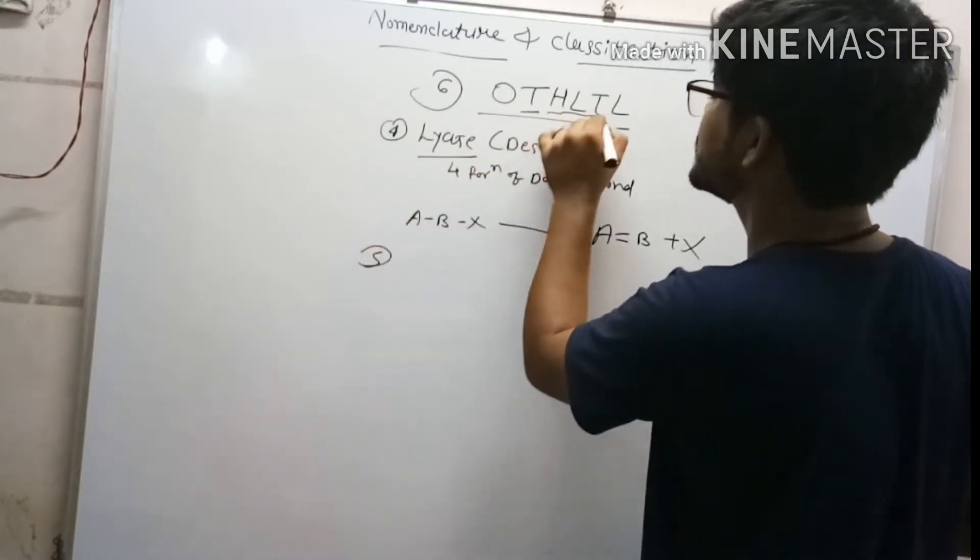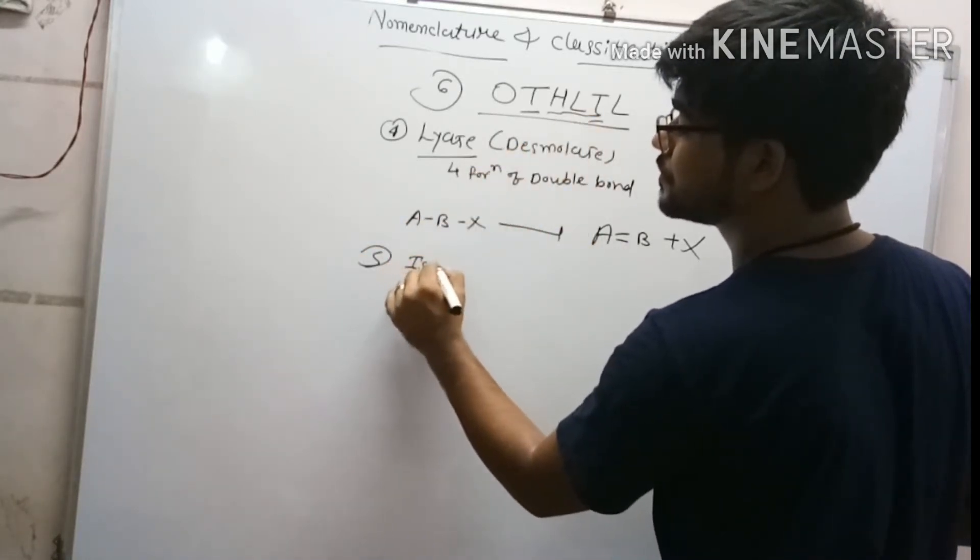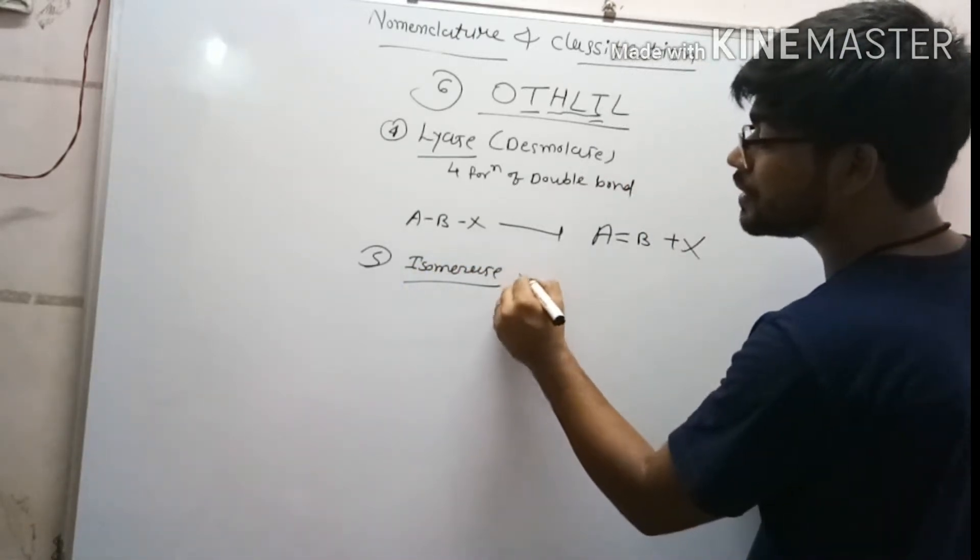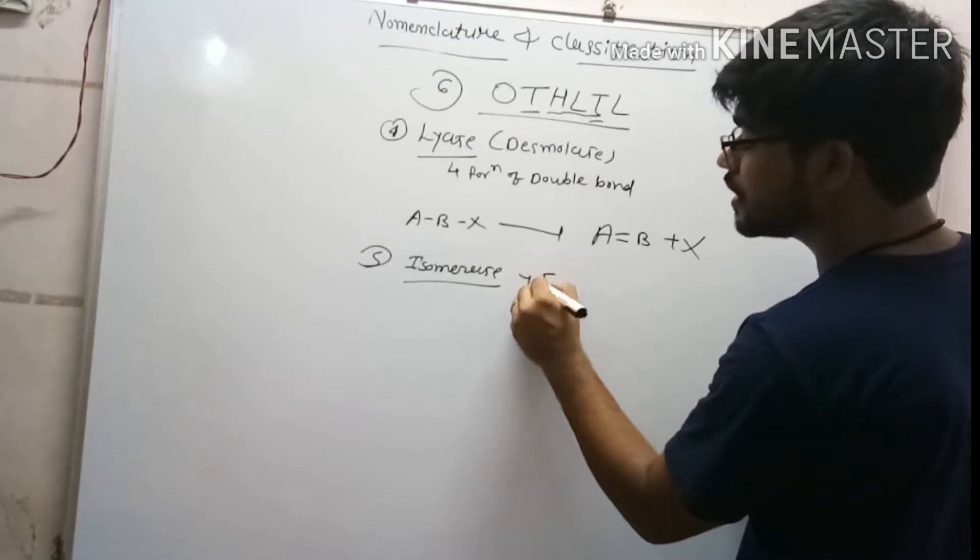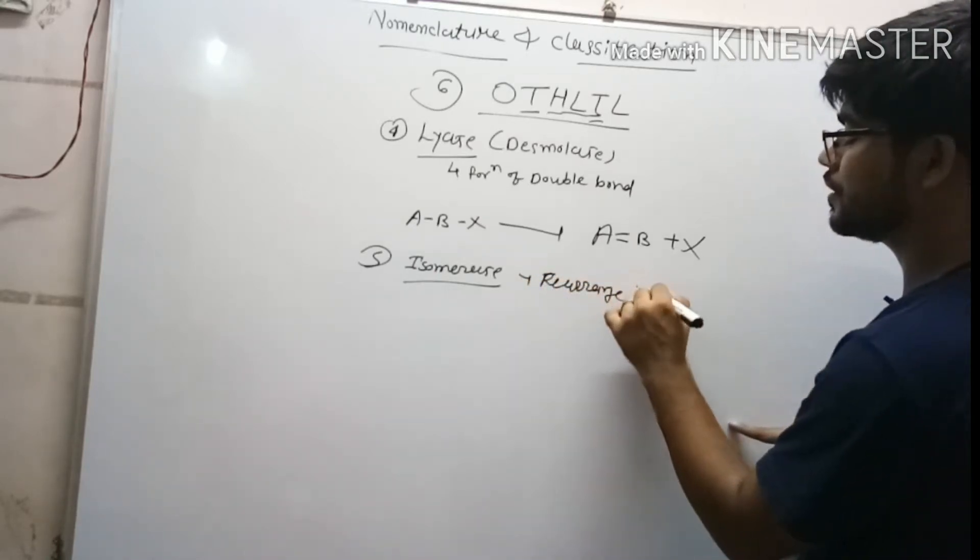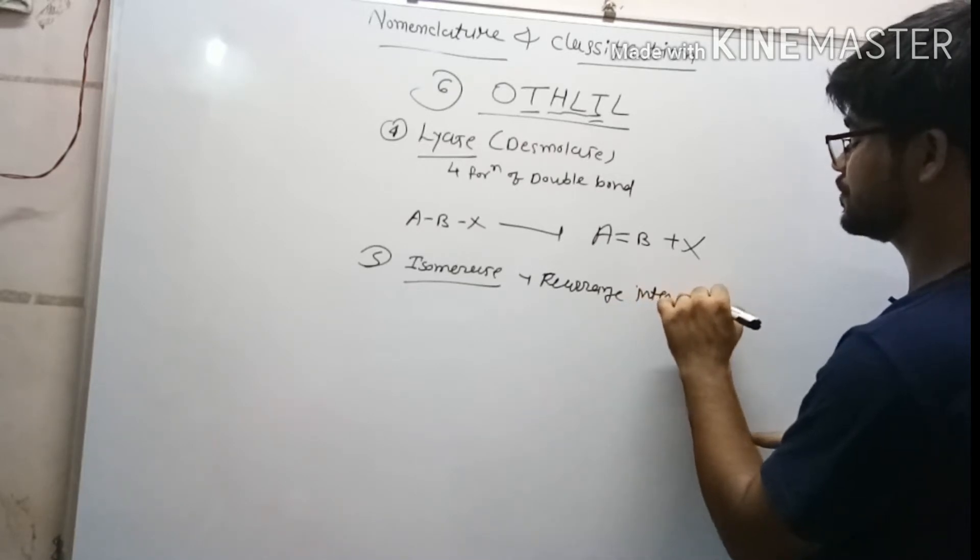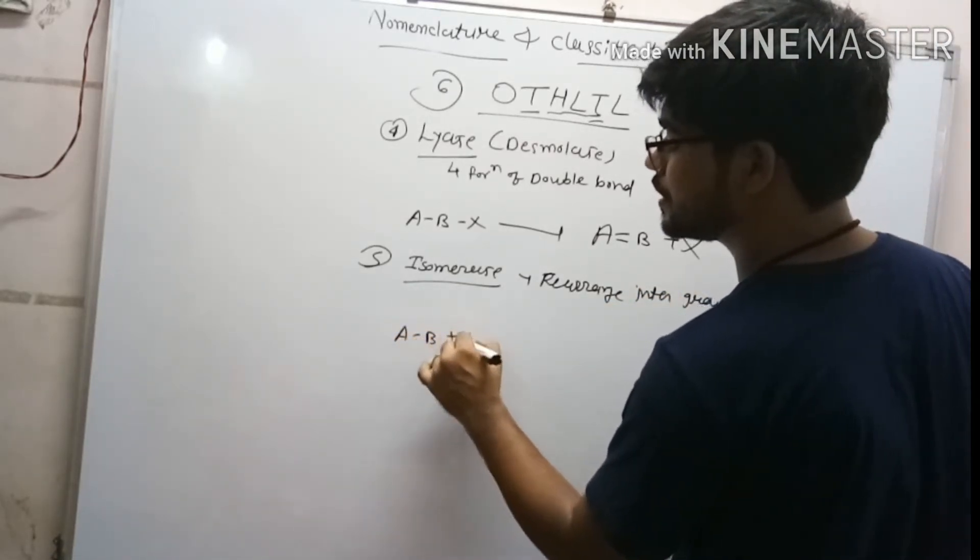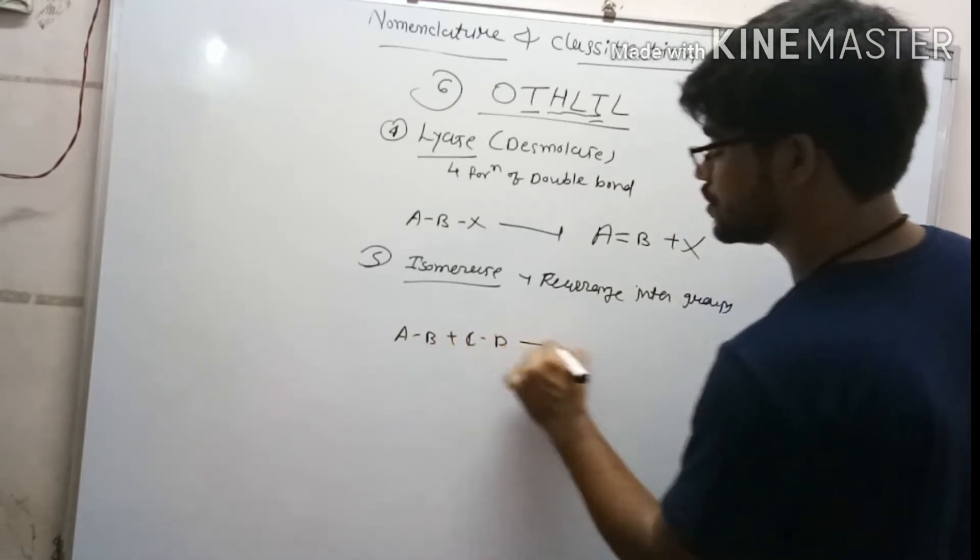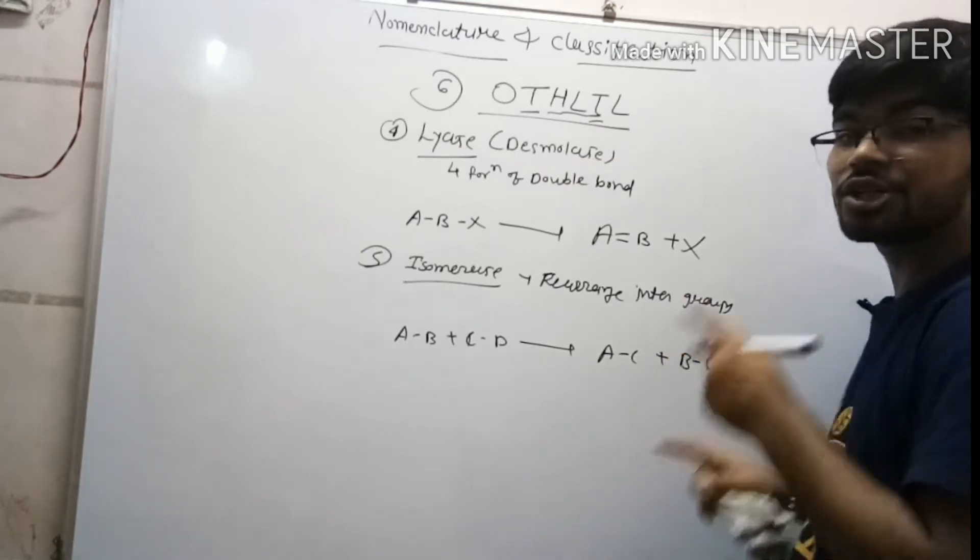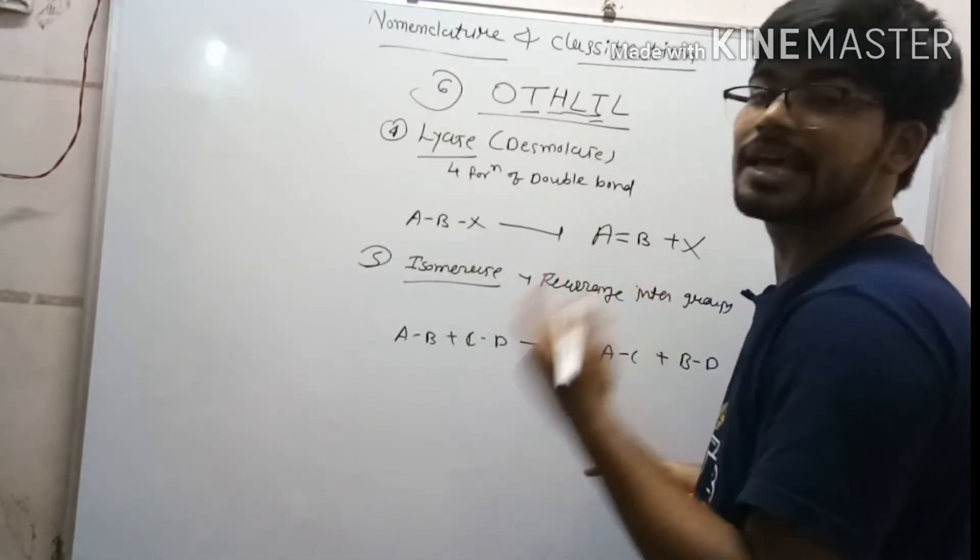The fifth one is isomerase. As the name suggests, what it will do? It transfers or rearranges intra groups. For example, A having B group and C having D group. What it does? AC plus BD. Intra group change will be done by isomerase enzyme.